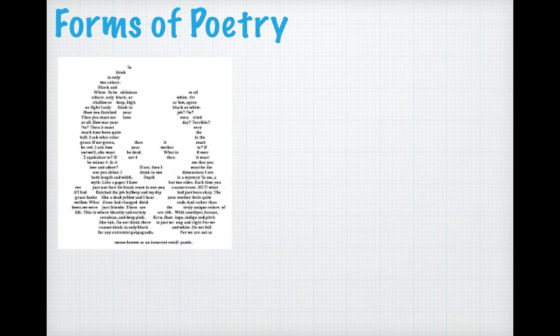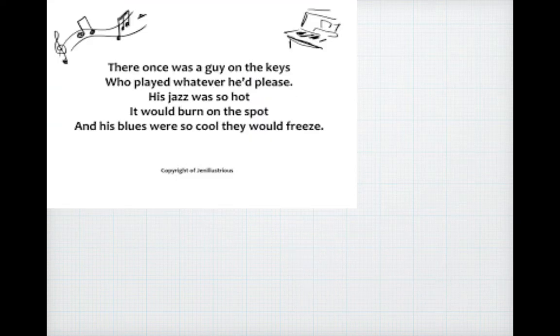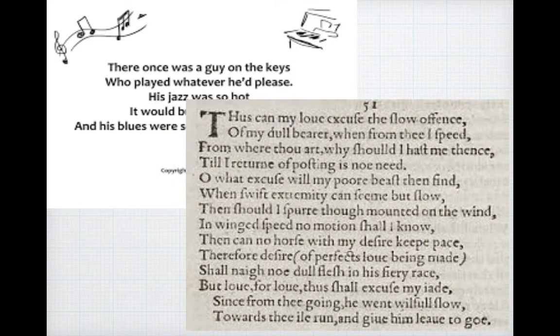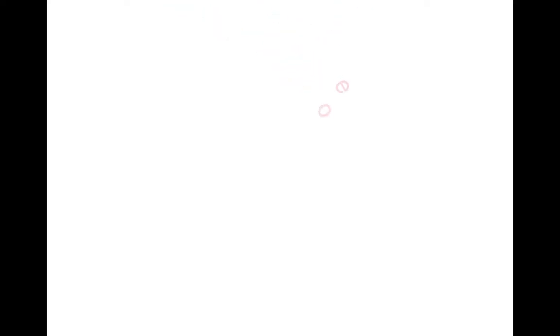Poems come in all different shapes, all different sizes. Some of them rhyme. Some of them have very specific rules, like how many syllables they have to have per line, how many lines they can have. And other poems have absolutely no rules at all. But for me, whenever I think about poetry, I think about one thing and one thing only — and that is rap. You know what rap stands for? Rap stands for rhythm and poetry.